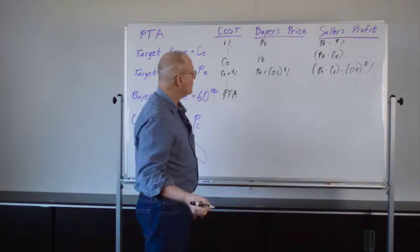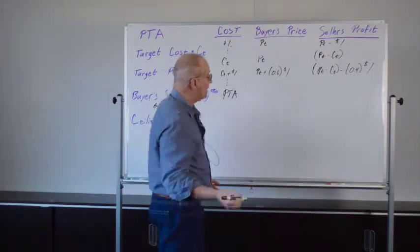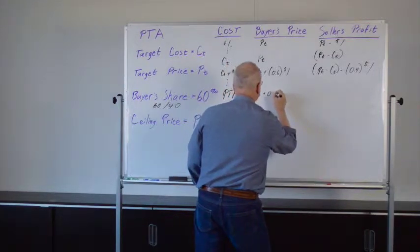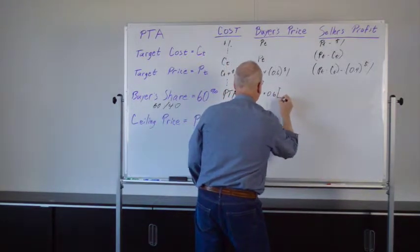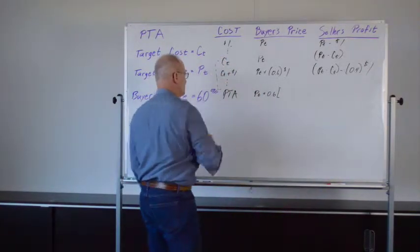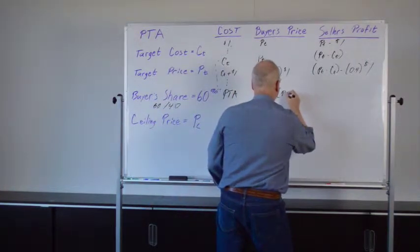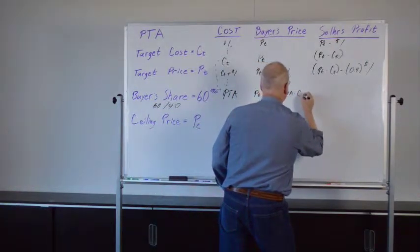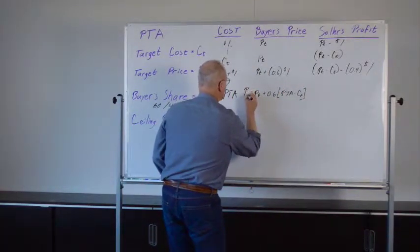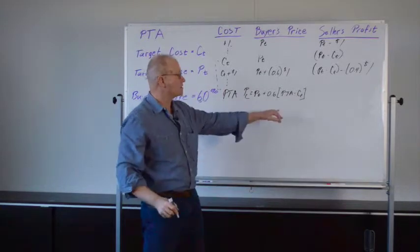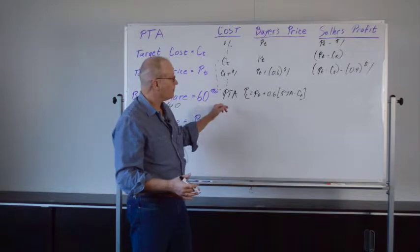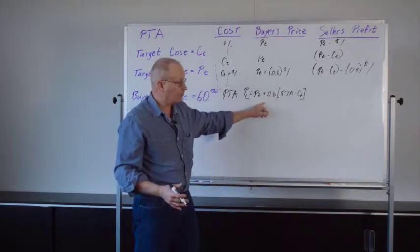And here, the buyer's price is going to be P sub T plus 60% of the cost overrun, which is all the way from the target cost to the PTA. So it's equal to PTA minus C sub T. And by definition, this is equal to P sub C, the ceiling price. That's the meaning of the PTA. When the cost reaches the PTA, the buyer's price reaches the ceiling price.